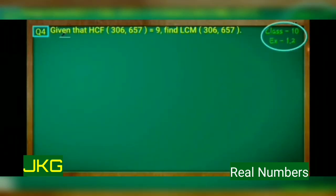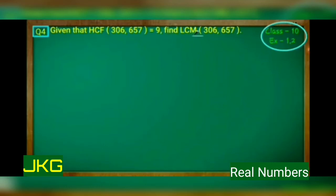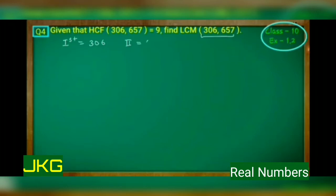Let's do question number four. Given that HCF of 306 and 657 is 9, you have to find the LCM of 306 and 657. The first number given is 306, the second number is 657, and HCF is given as 9. You have to find the LCM.